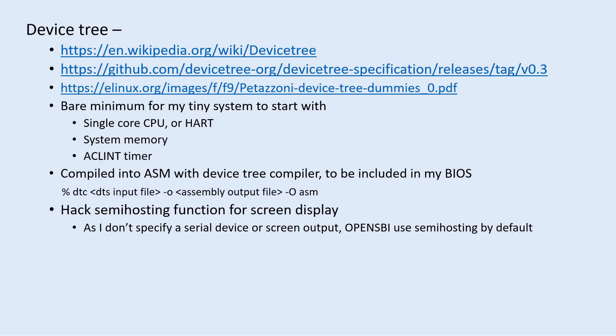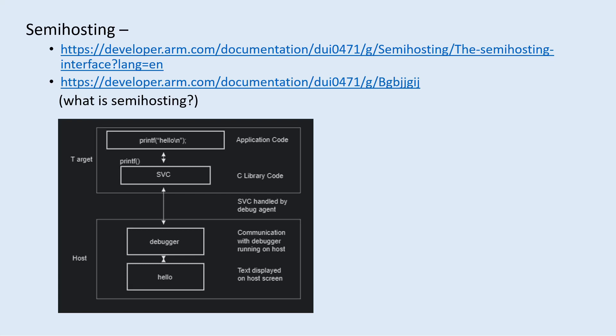As I don't have a serial device or other means for display, OpenSBI places a semi-hosting device as the default output device. I did some hacking to route the semi-hosting back to my own display routine I used before. I will change this later to have a proper device specified in the device tree, but for now it's just for my own convenience.